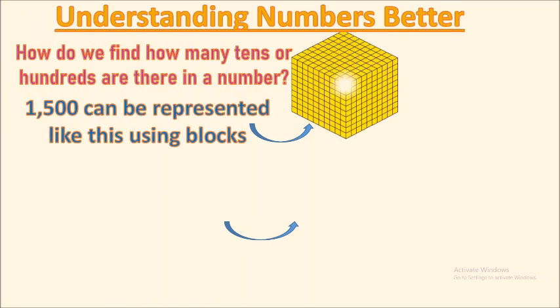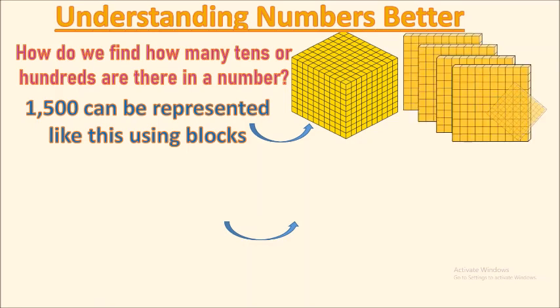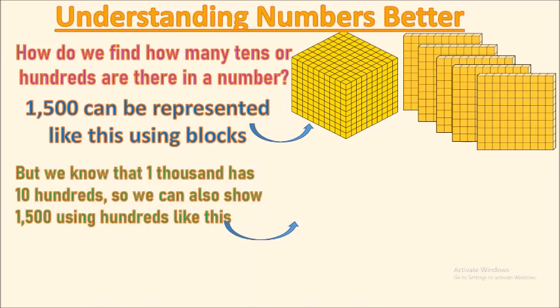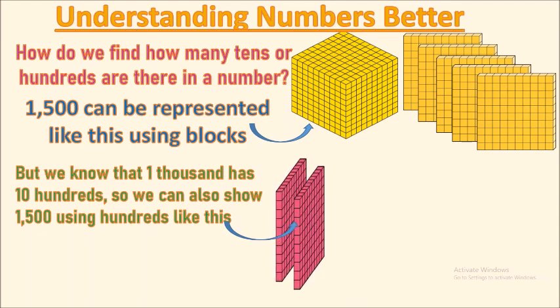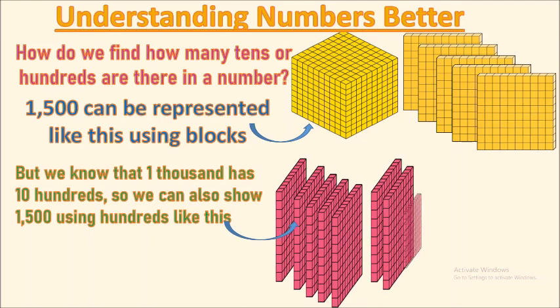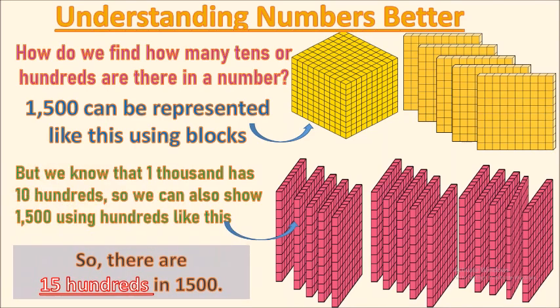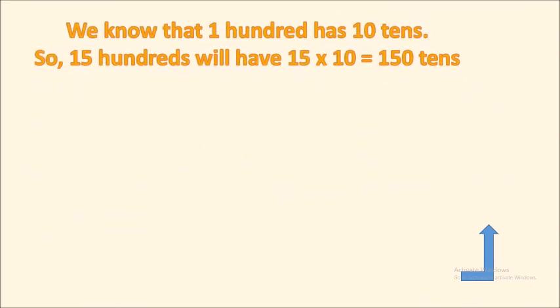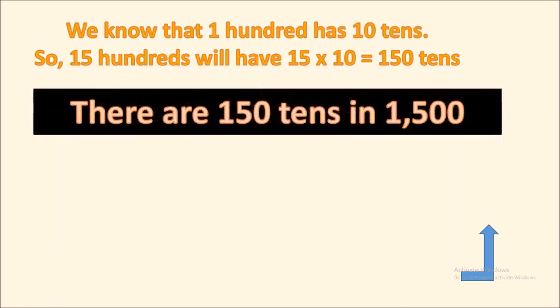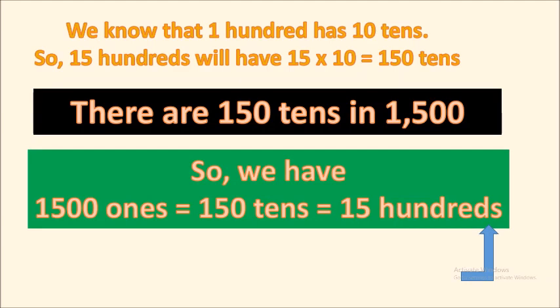1500 can be represented using blocks. We know 1000 has 10 hundreds in it, so we can show it as 15 hundreds in 1500. We know that 100 has 10 tens, so 15 hundreds will have 15 multiplied by 10, which equals 150 tens. There are 150 tens in 1500. So we have 1500 ones equal to 150 tens equal to 15 hundreds.